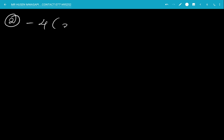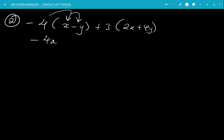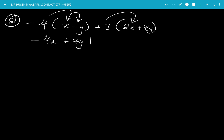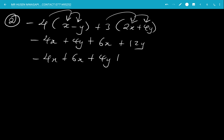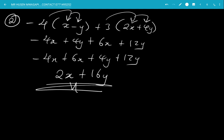Example 2 — Simplify: −4(x − y) + 3(2x + 4y). The minus 4 multiplies the first bracket: minus 4 times x is minus 4x, minus 4 times negative y is plus 4y. The 3 expands the second bracket: 3 times 2x is plus 6x, 3 times 4y is plus 12y. Collecting like terms: minus 4x plus 6x is 2x, and 4y plus 12y is plus 16y. Final answer: 2x + 16y.